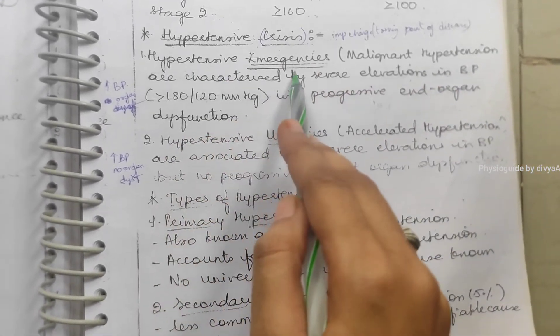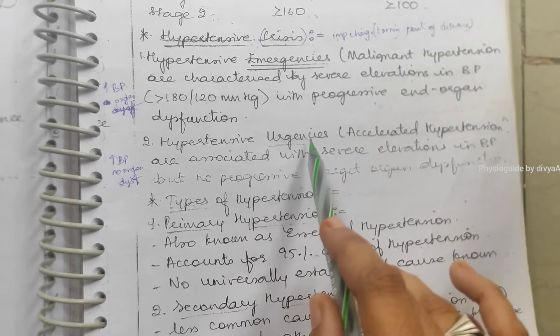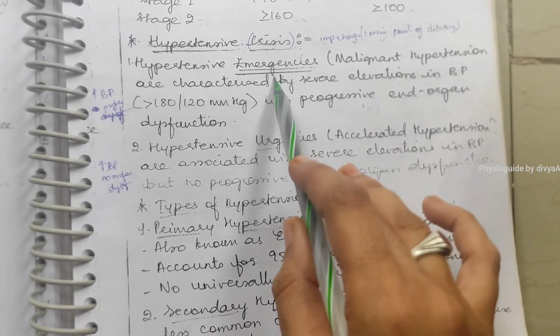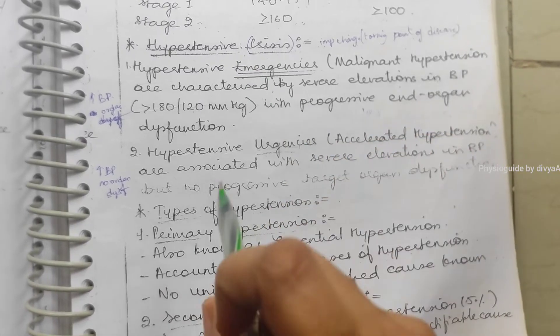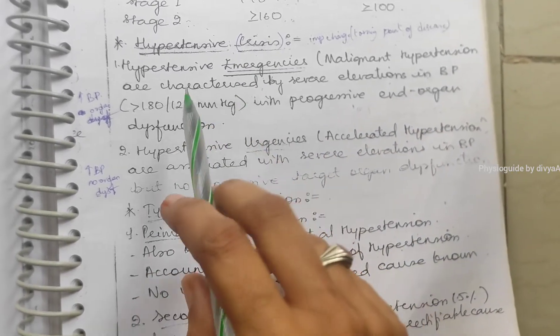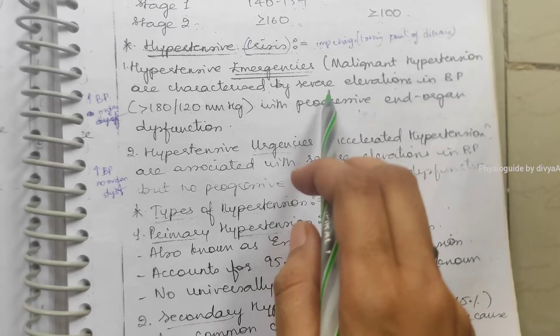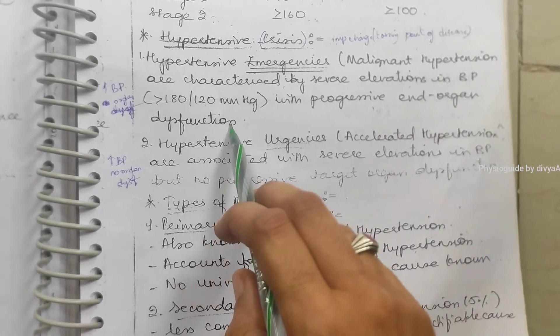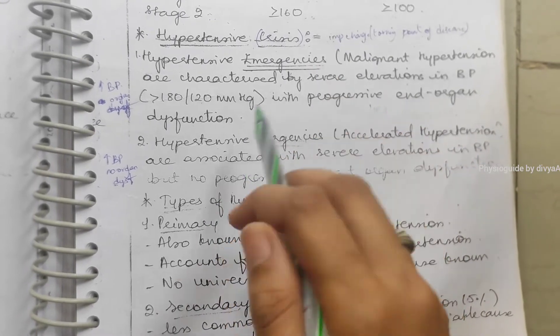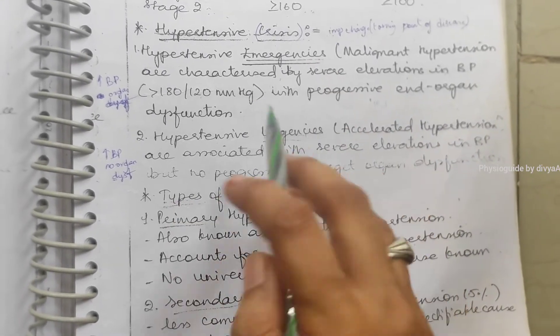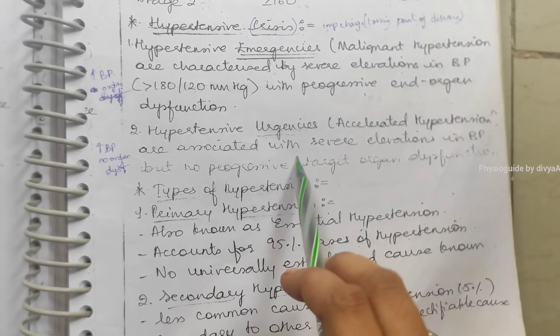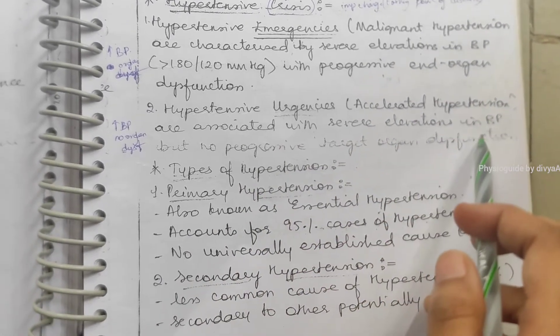Emergencies means in this hypertension, along with the organs, are also affected. It is characterized by severe elevation in BP with progressive end organ dysfunction. In urgencies, no organs are affected, and these are associated with severe elevation of BP with no progressive target organ dysfunction.